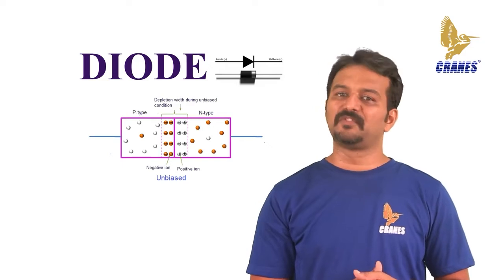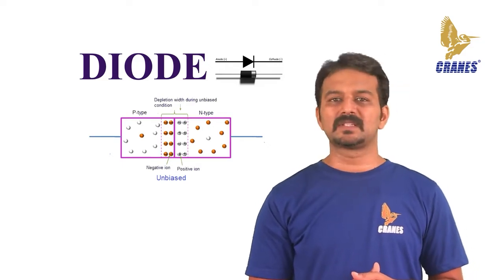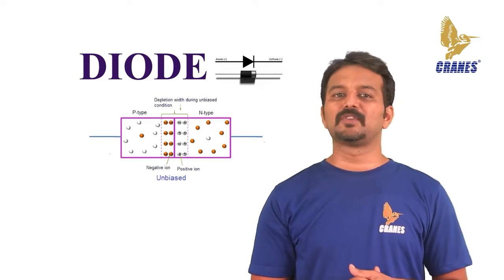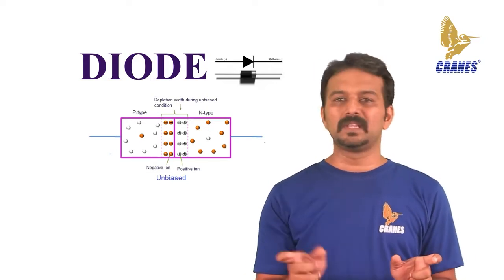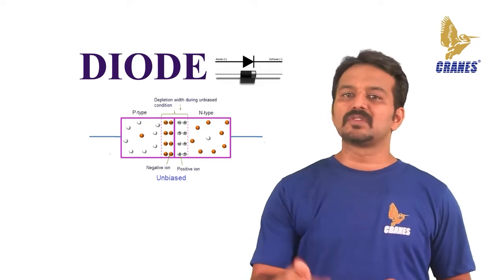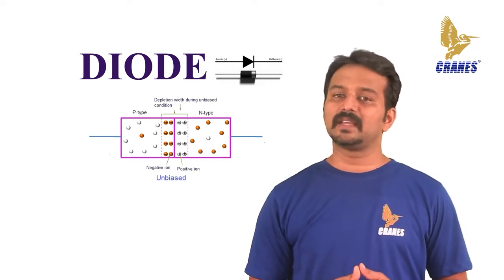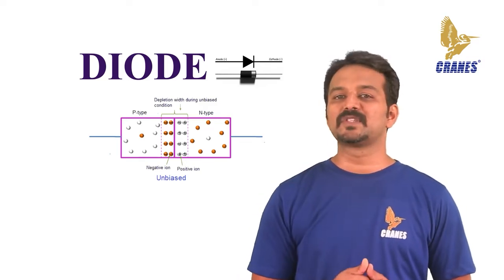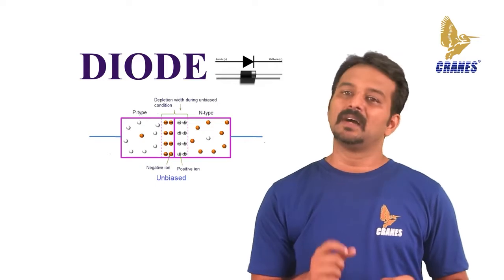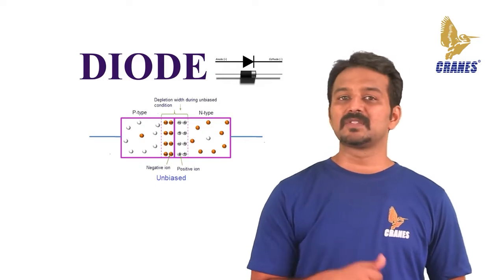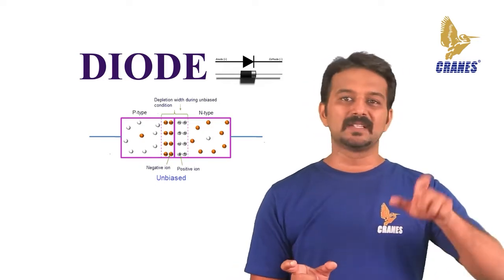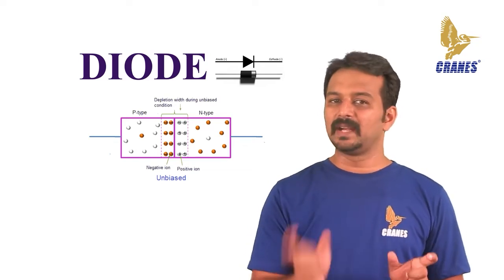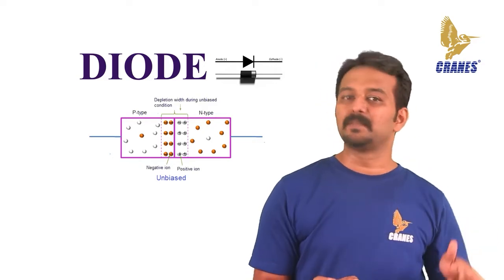Due to the concentration difference, majority carriers diffuse from one side to the other. The concentration of holes is high in the p-type region and low in the n-type region, so holes start diffusing from the p-region to the n-type region. Similarly, the concentration of free electrons is high in the n-type region and low in the p-type region, so free electrons start diffusing from the n-type region to the p-type region.